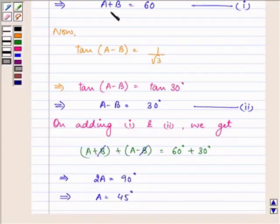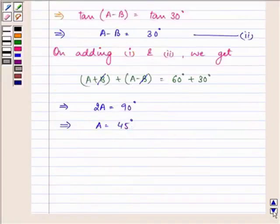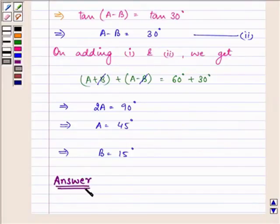And if A+B is equal to 60 degrees and A is 45 degrees, then that implies the value of B is equal to 15 degrees. So, the answer for this question is the value of angle A is 45 degrees and the value of angle B is equal to 15 degrees.